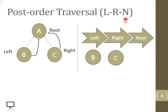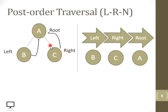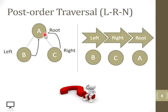Because in post-order we process the root node last. Now, for moving from the left child back to the root node, or from the right child back to the root node, there are no back links available. There are only links from a parent node to child nodes, but no link from a child node back to the parent.